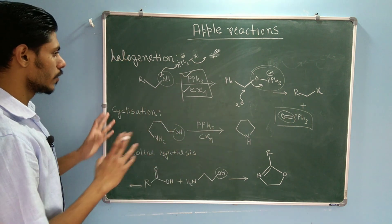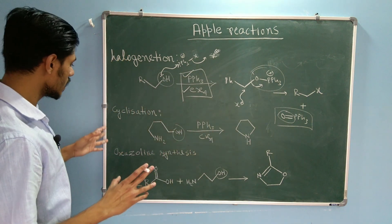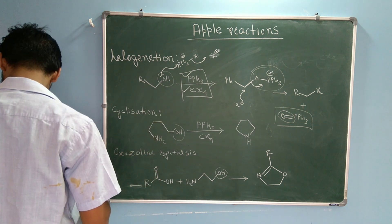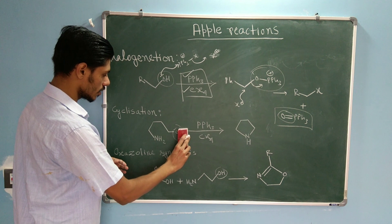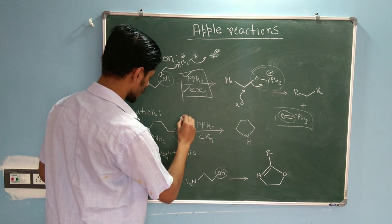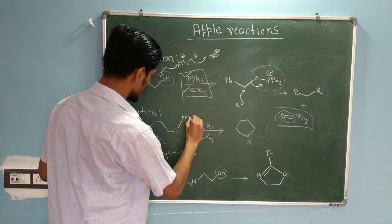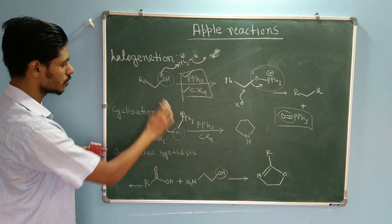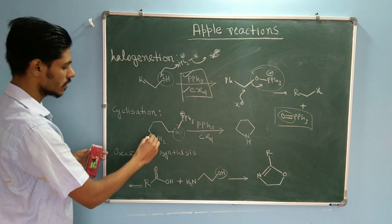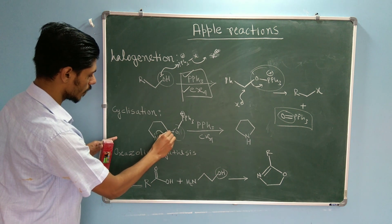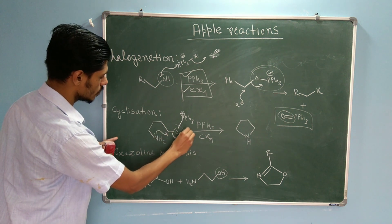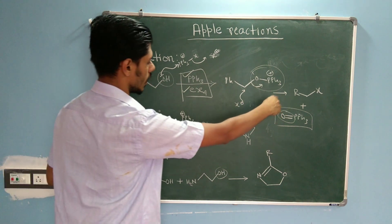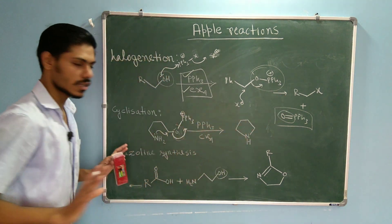For the Cyclization reaction, the same first step occurs: Ph3P+–X is generated, and in a similar fashion the OH attacks the PPh3 to form the activated intermediate. Then the nitrogen lone pair attacks intramolecularly, Triphenylphosphine oxide departs as the leaving group, and you get the cyclized product.